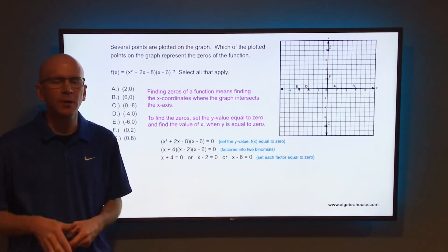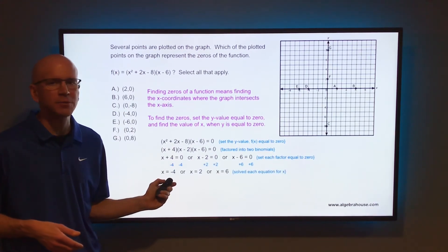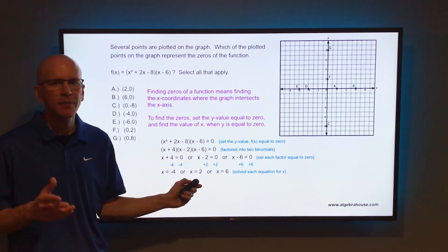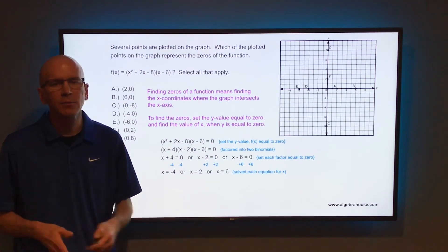Now you have three simple equations to solve for x. If x + 4 = 0, then x = -4. If x - 2 = 0, then x = 2. And if x - 6 = 0, then x = 6.